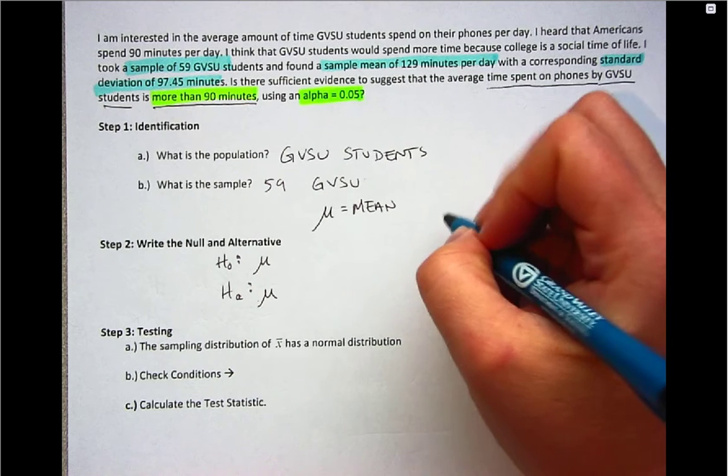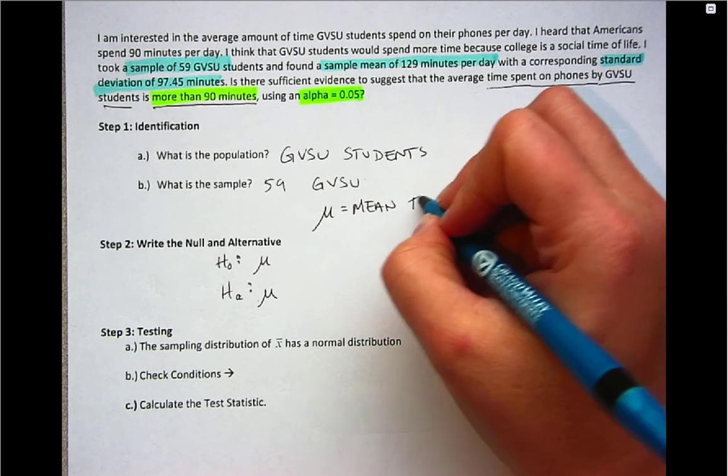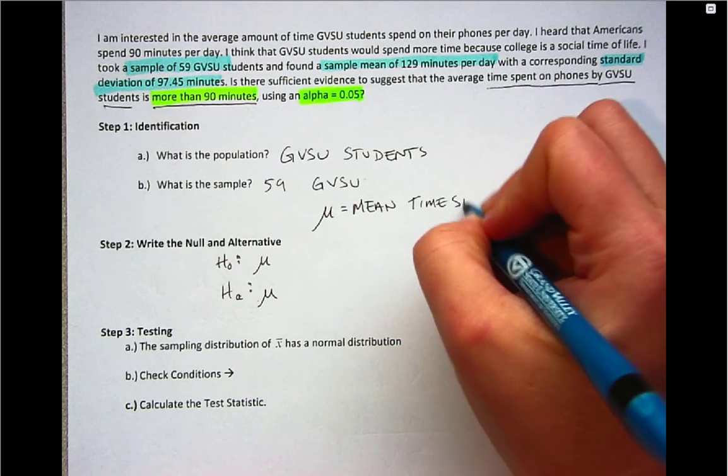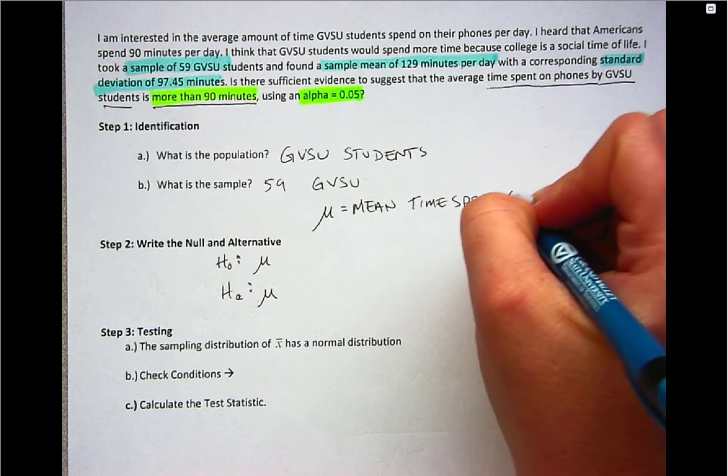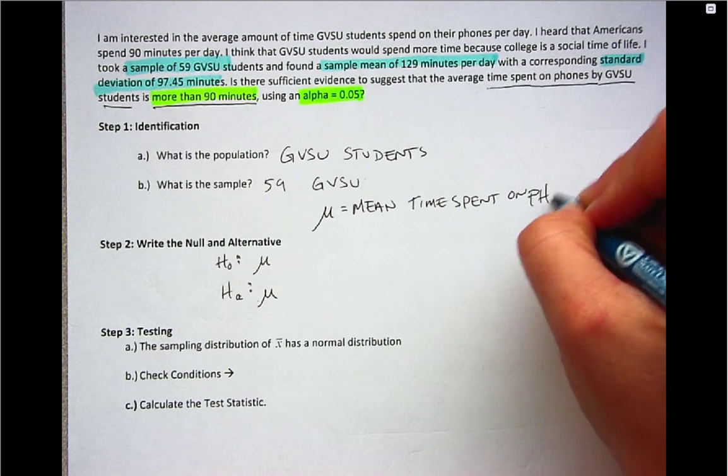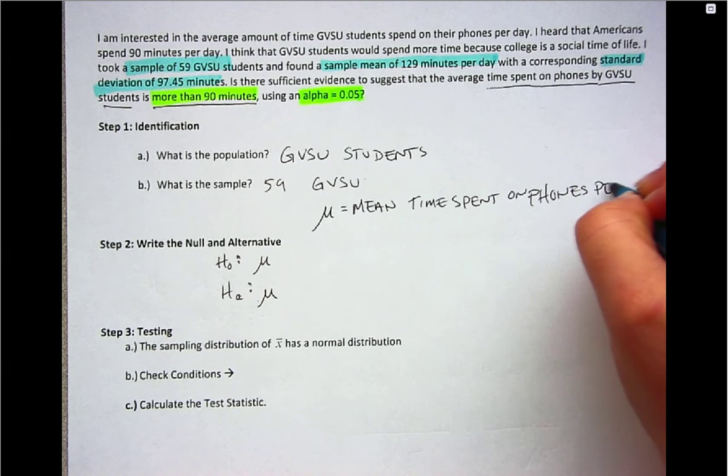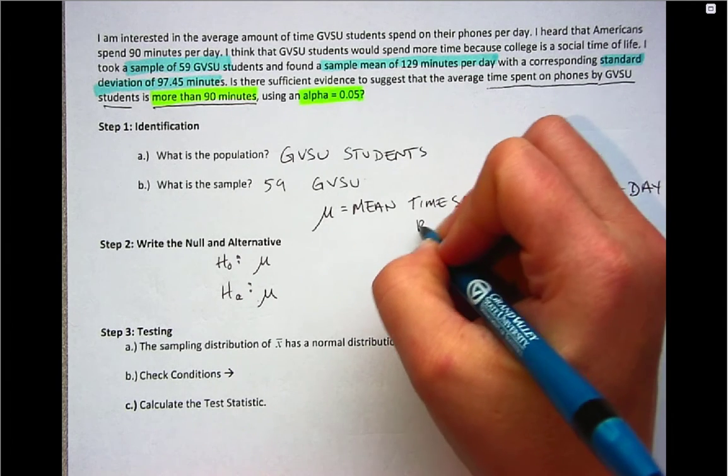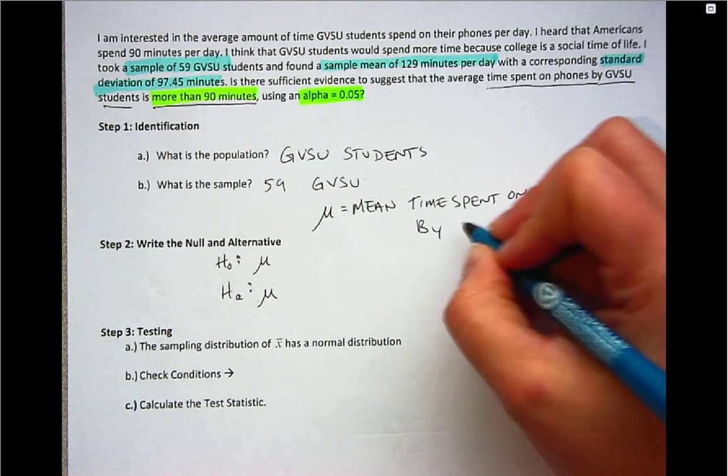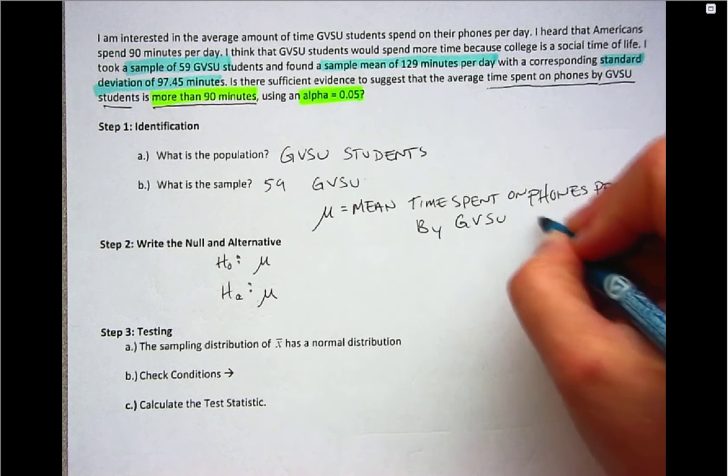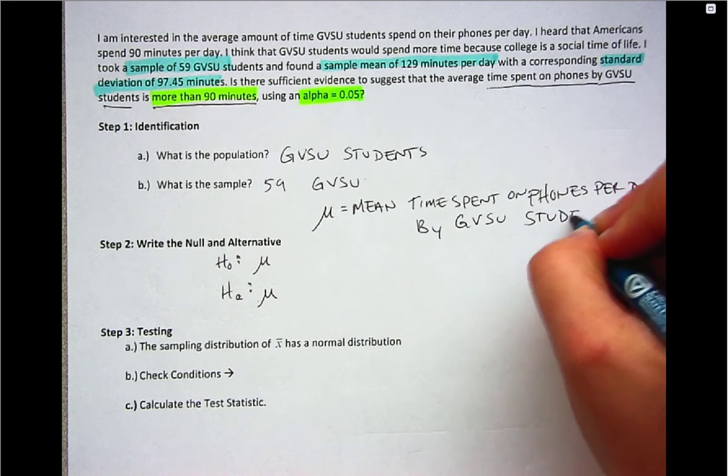Then what we're measuring, so mean time spent on phones per day, and then the group. So that would be by Grand Valley students. So that's how we're defining this mu.